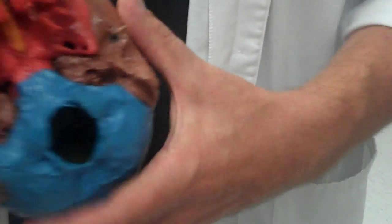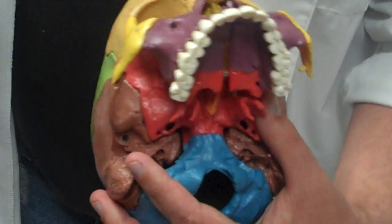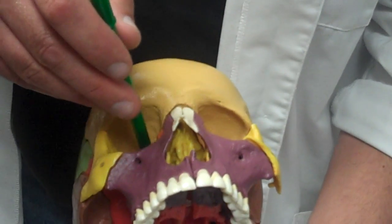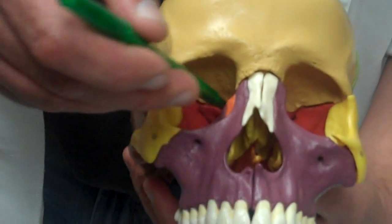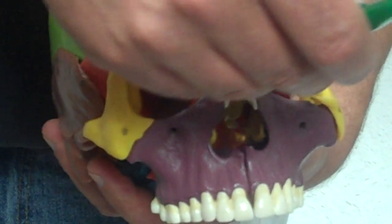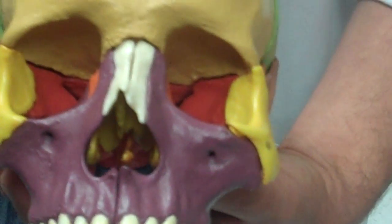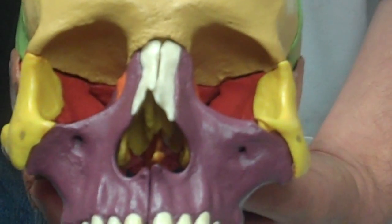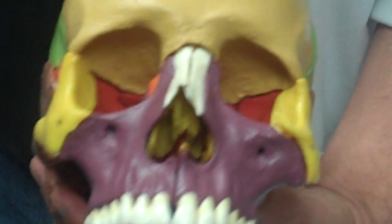Then, next one. Sphenoid bone. Okay, we take a look. Sphenoid bone. It's back in here. Orange. Sphenoid bone is the ones we have to know. Optic foramen. It's this hole deep in there.